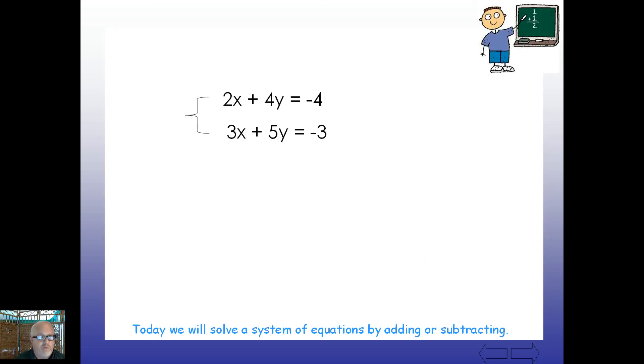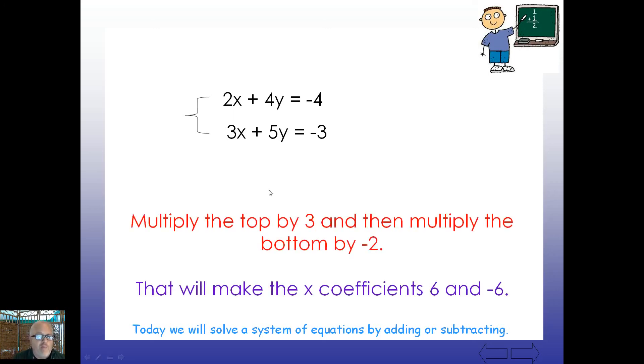How about this one? 2x plus 4y equals negative 4. 3x plus 5y equals negative 3. So let's see. 2 and 3. These two don't really play nicely together. 4 and 5. They're neighbors on the number line, but they don't play nicely together either. It looks to me like here's an example where we're going to have to multiply not one equation, but both. So multiply the top number by 3, and then multiply the bottom number by negative 2. This will make the x coefficient 6 and negative 6. So how you would see that is we'd simply multiply the top one by 3 and the bottom one by negative 2. And, of course, this is all fair game. We can do this any time we want to. So we'd bring this over, and we'd end up with 6x plus whatever. This would give us negative 6x plus whatever, blah, blah, blah. And these two, of course, would cancel out, which is our job to get rid of the x's. And then whatever these would change by, solve for y.